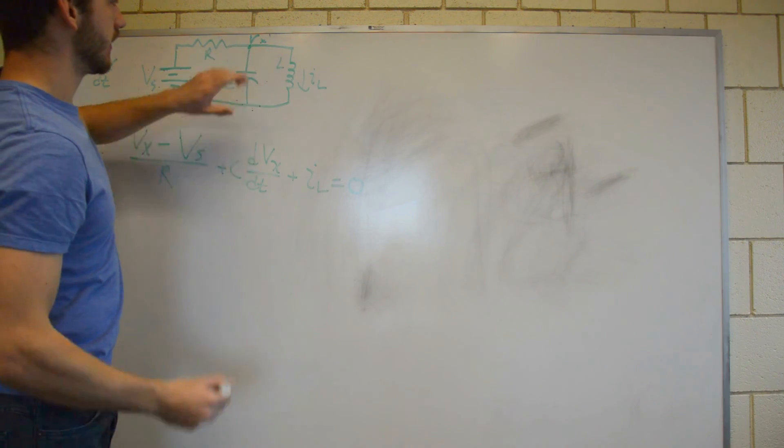So the way we do that is we look at the circuit, and then we realize that Vx is the same thing as Vl. And if you remember your equation for the voltage across an inductor, it's just Vl equals L di dt. So all that means is that anywhere we see a Vx, we can replace it with Vl, which is just L di dt. So here, I'm going to separate this fraction at the same time. We're going to have L di dt over R, minus Vs over R, plus C.